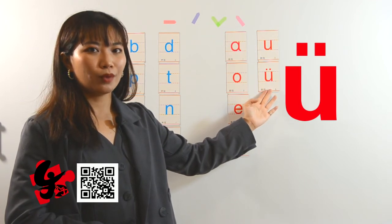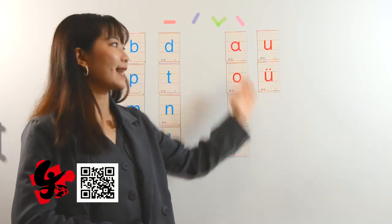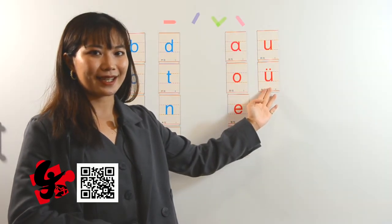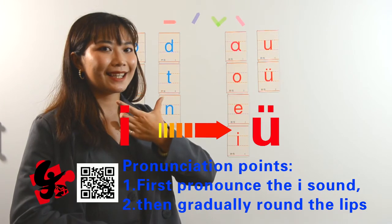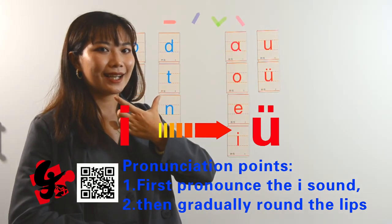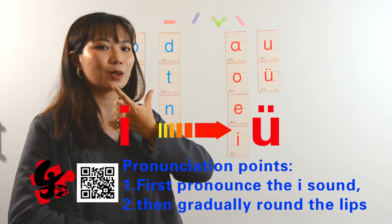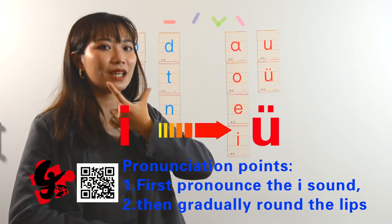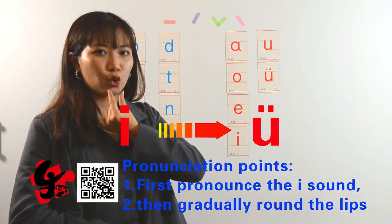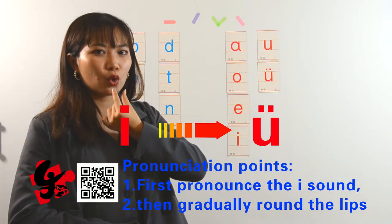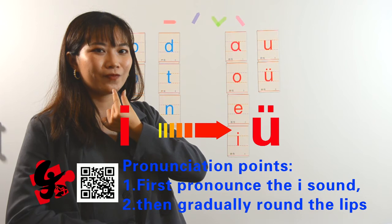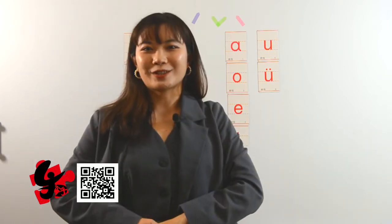好，我们再来一遍。Let's do it again. 先读伊，然后把嘴巴变小 — change your mouth — 伊, 呜. Let's test.